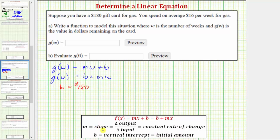And then m, the slope, which in this case is equal to the change in the value divided by the change in the number of weeks, would be equal to negative $16 per week.